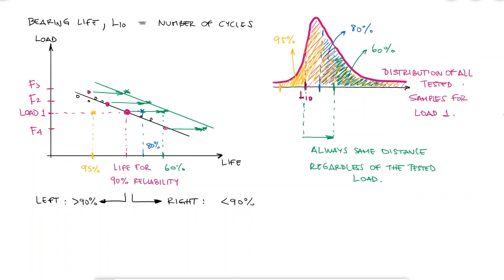If I want to guarantee that 99% of my samples have not yet shown any signs of fatigue failure, I would report a bearing life in number of cycles that is way lower than the bearing life I would report if only 90% of the samples have not failed.